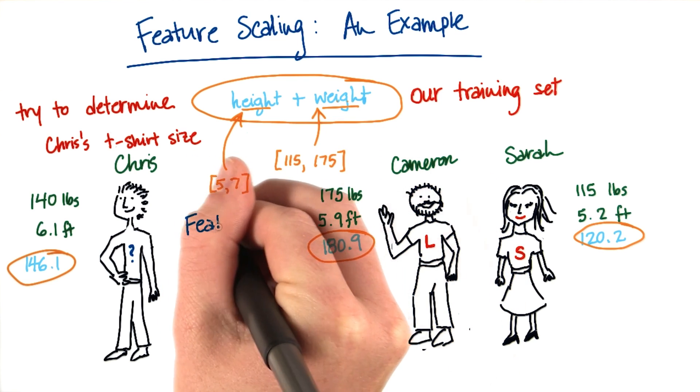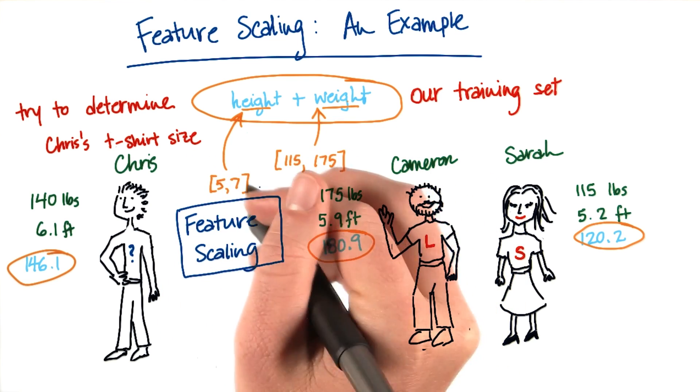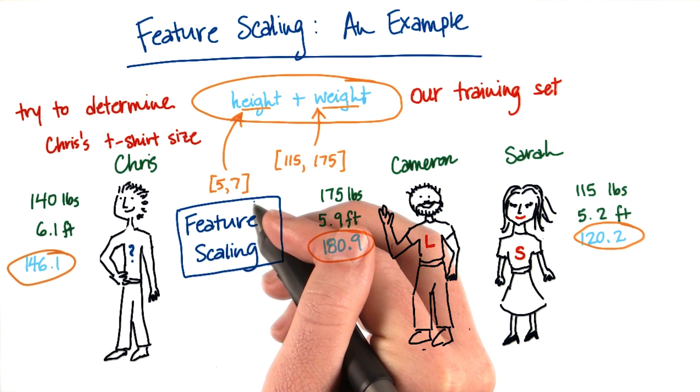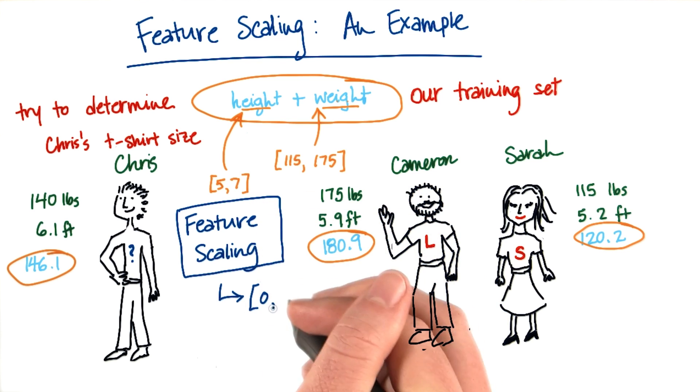And this is what feature scaling does. It's a method for rescaling features like these ones so that they always span comparable ranges, usually between 0 and 1.